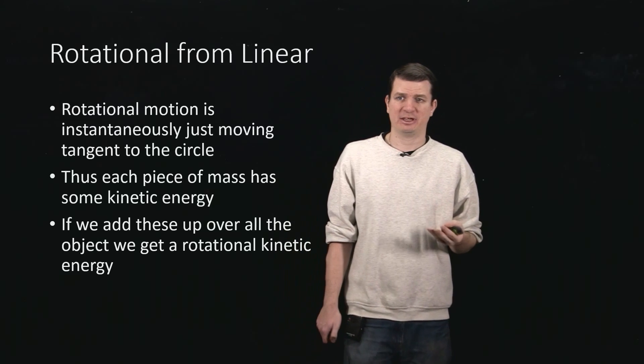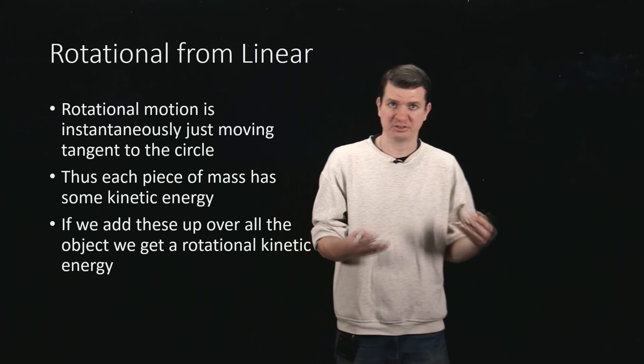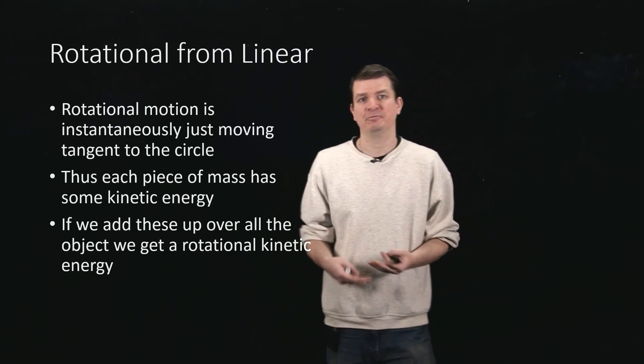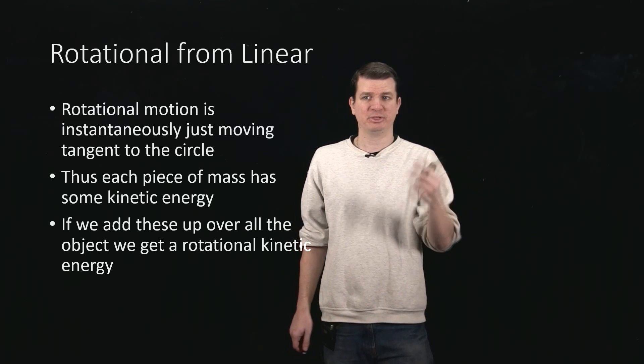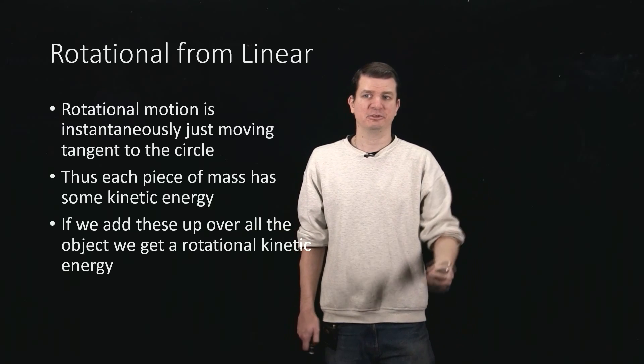So each piece of mass actually has kinetic energy because it's got some tangential velocity, and then I can do one half mv squared. That gives me the kinetic energy of that little piece of mass sitting at some location r.